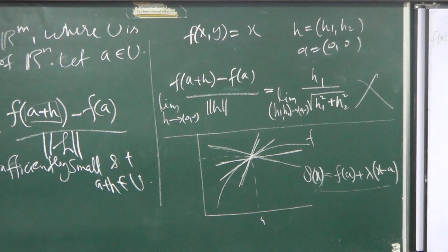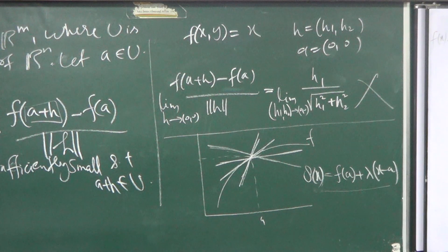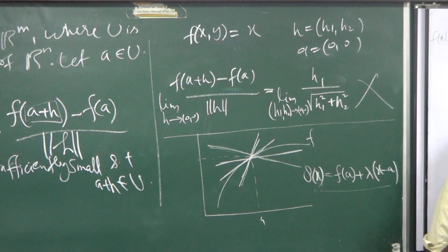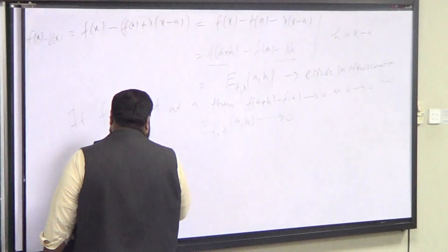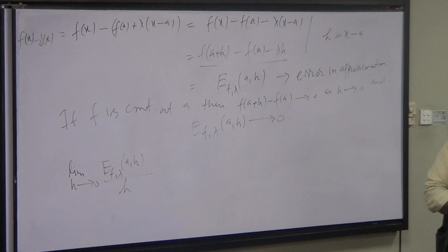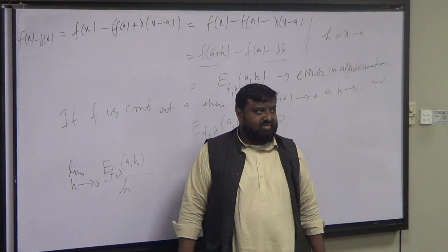So how can I compare the error and h? I can take the limit as h goes to zero of the ratio of error by h. By analogy: e^n over n goes to infinity as n→∞ because the numerator grows faster; but n over e^n goes to zero because the denominator grows faster. Similarly, when the error is rapidly going to zero, this ratio — error divided by h — will go to zero.